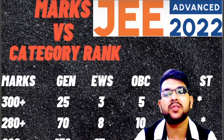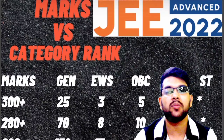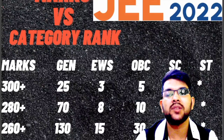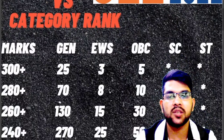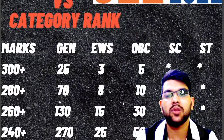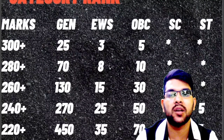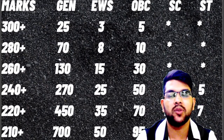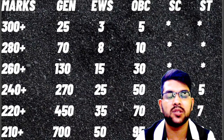If you score 300+ marks — that is rare — congratulations! Your rank will be under 25 for General, under 3 for EWS, and under 5 for OBC. For 280+: under 70 for General, under 8 for EWS, under 10 for OBC. For 260+: under 130 for General, under 15 for EWS, under 30 for OBC. For 240+: under 270 for General, under 25 for EWS, under 50 for OBC. For 220+: under 450 for General, under 35 for EWS, under 70 for OBC, and under 10 for SC/ST — that is 100% sure.